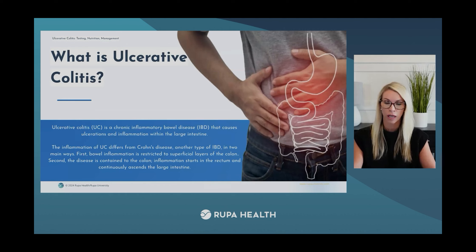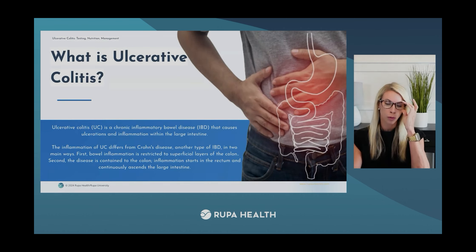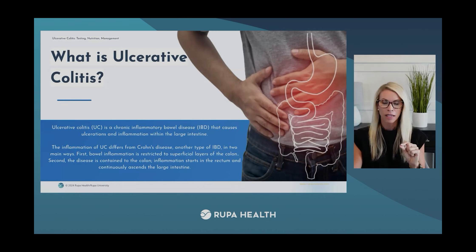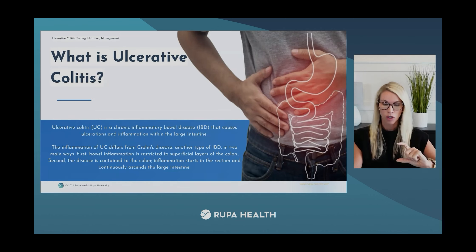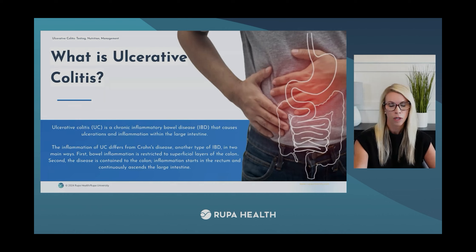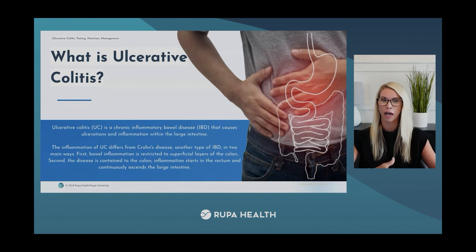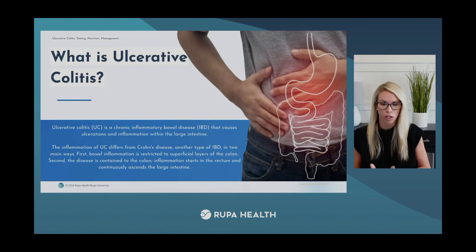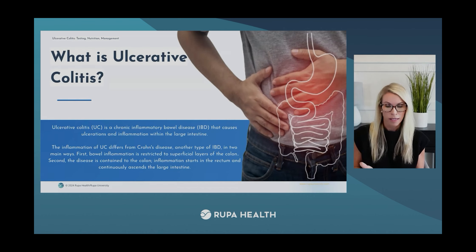The inflammation in ulcerative colitis differs from Crohn's in two main ways. First, the inflammation is pretty restricted to the superficial layers of the colon — the mucosa and submucosa. Second, the disease is more contained to the colon. Inflammation might start in the rectum and then continually ascend into the large intestines. We often see ulcerations, erosions, and bleeding.